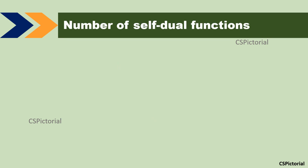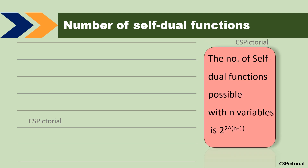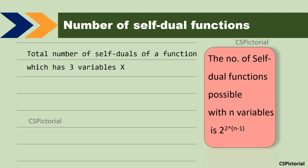This is additional information useful in competitive exams. The number of self-dual functions possible with n variables is 2^(2^(n-1)). For example, the total number of self-dual functions of a three-variable function with x, y, z equals 2^(2^(3-1)) = 2^(2^2) = 2^4 = 16. You could apply this formula for any number of variables.